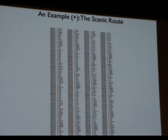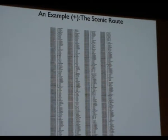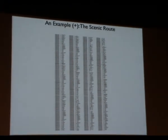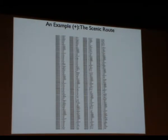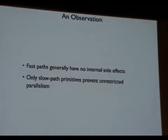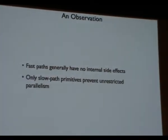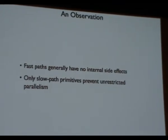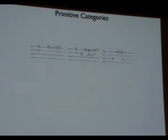Meanwhile, here's the scenic route for plus. So, this is on the order of something like two or three hundred instructions. Much, much slower. So, we can make an observation about fast and slow paths based on this property. Generally, if fast paths aren't accessing global data or writing to global data, they don't have any side effects with respect to runtime state. So, in that sense, only slow path primitives are preventing us from unrestricted parallelism. So, this is the basic idea that we use to build the parallel Racket implementation.